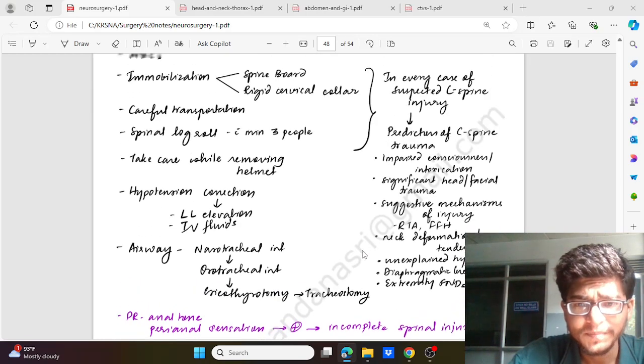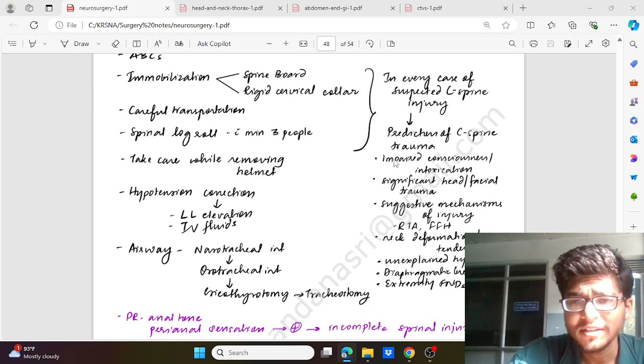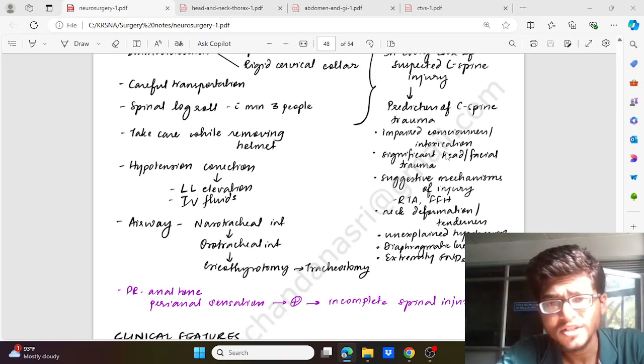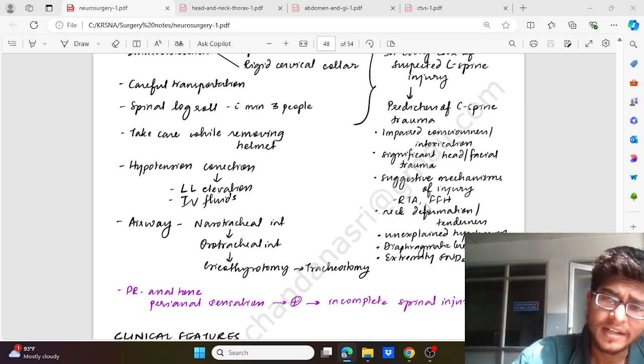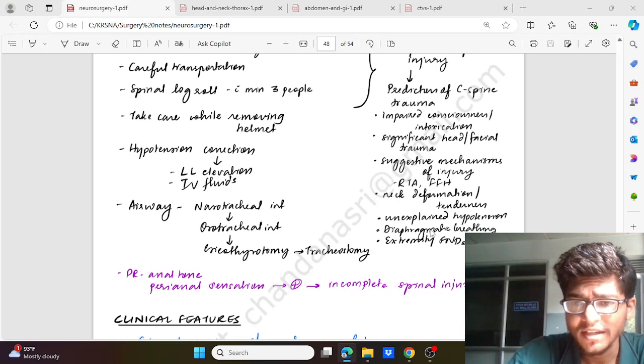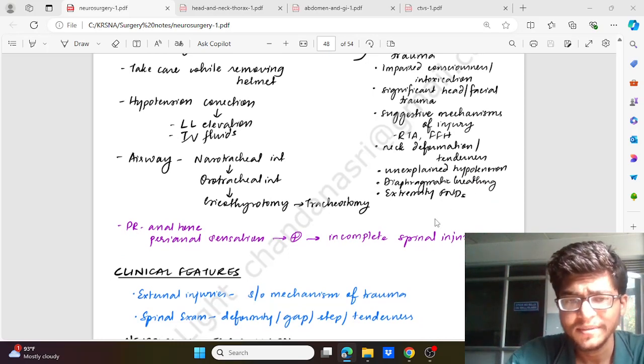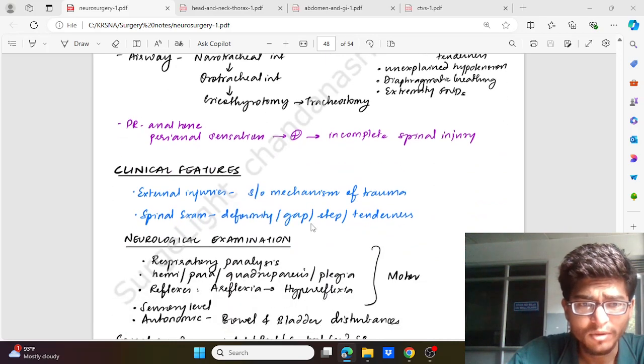PR tone - the anal tone - if there is perianal sensation positive, that means the spinal injury is incomplete. In case of suspected cervical spine injury, what are the predictors for spinal trauma? If there is impaired consciousness or intoxication, significant head or facial injury, mechanism like fall from height and RTA, neck deformation or tenderness, unexplained hypotension, diaphragmatic breathing, extremity functional neural deficit - these are some of the predictors for cervical spine trauma.